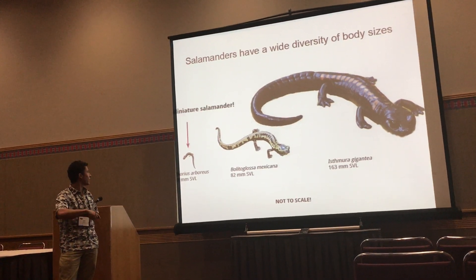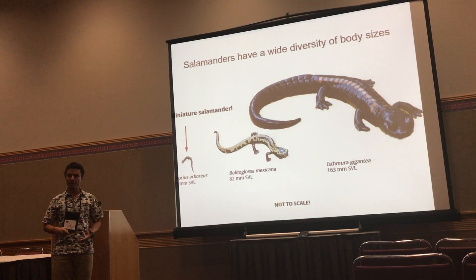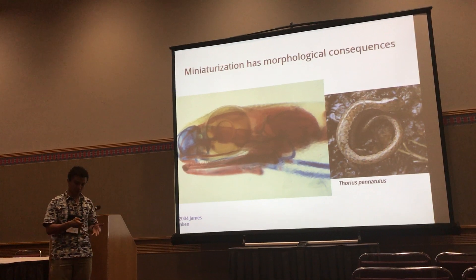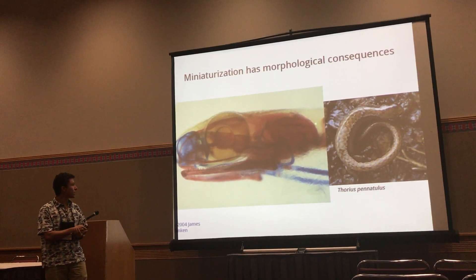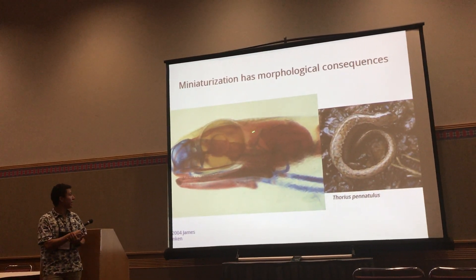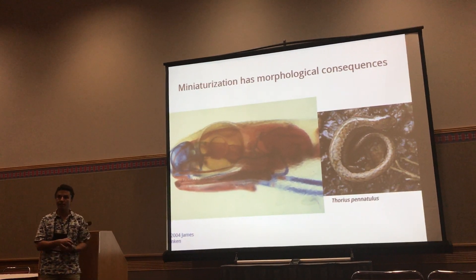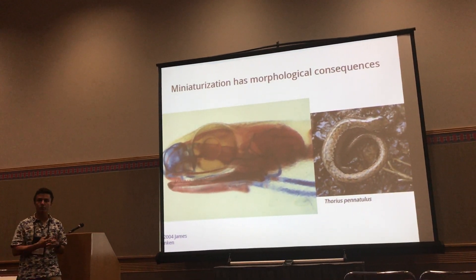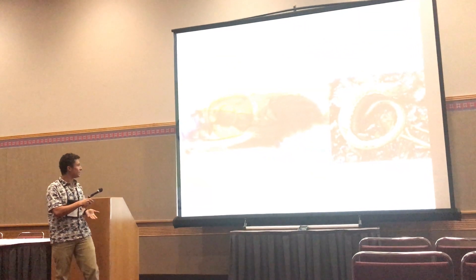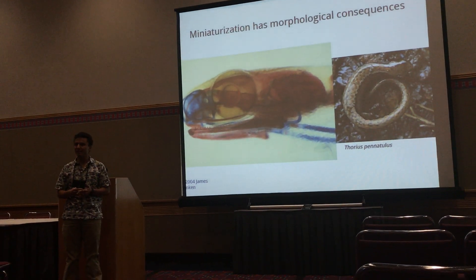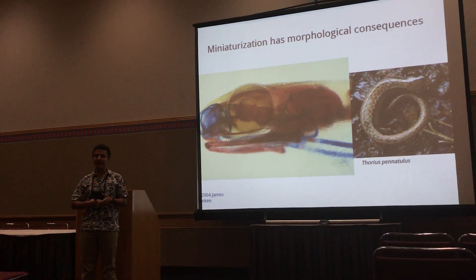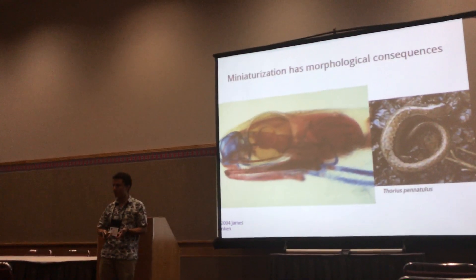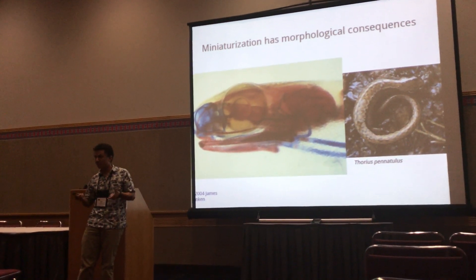We have some miniature salamanders, and this miniaturization has had important morphological consequences. For example, in this Thorius pennatulus salamander, we can see they have a tiny skull, the brain has been moved backwards, and the eye is extremely big in comparison to the head. Since genome size is correlated with cell size, and an eye needs a minimum number of cells to work, if these salamanders tried to make their eyes smaller it would just not work. So maybe they can make their genome sizes smaller.